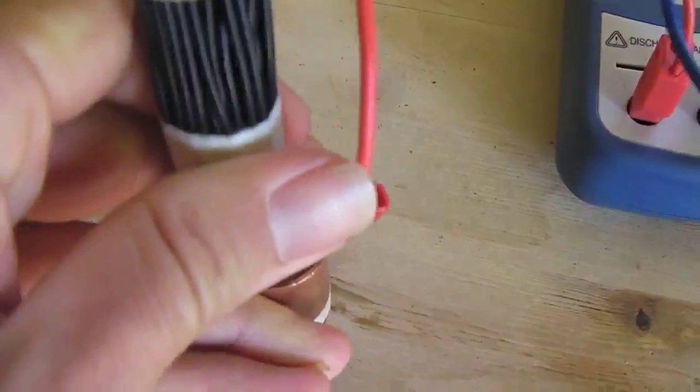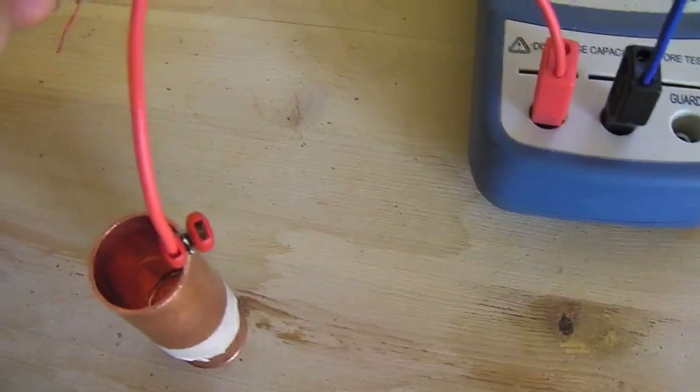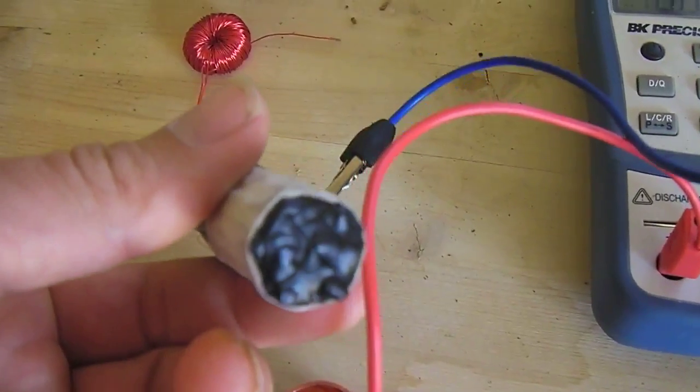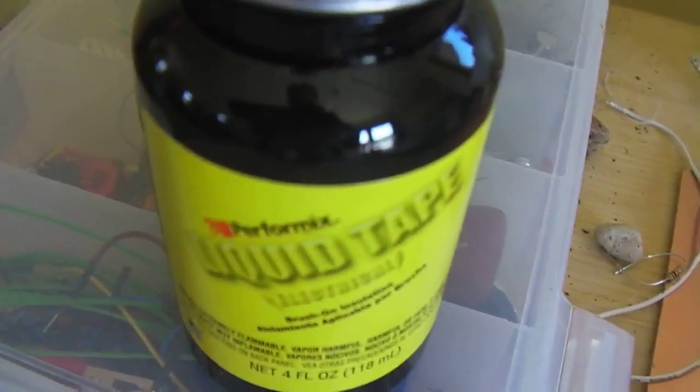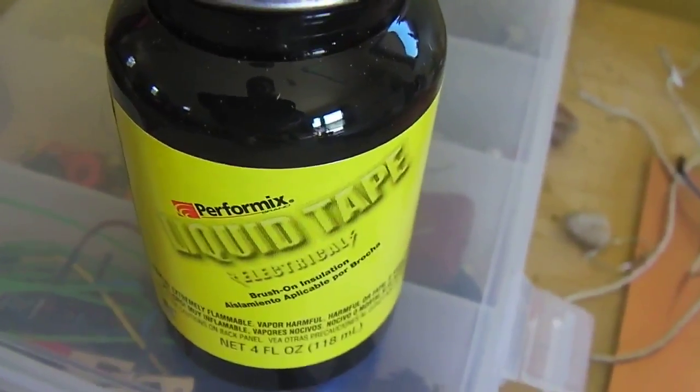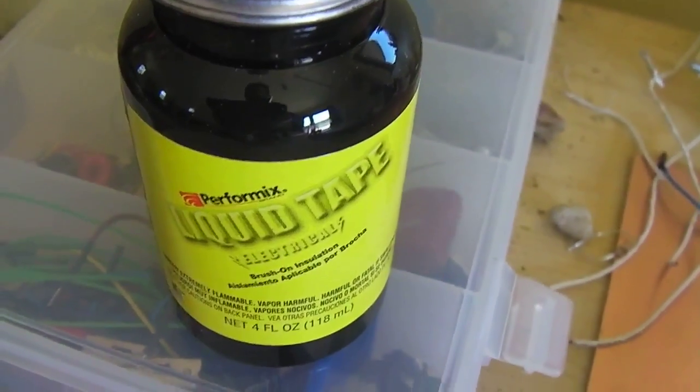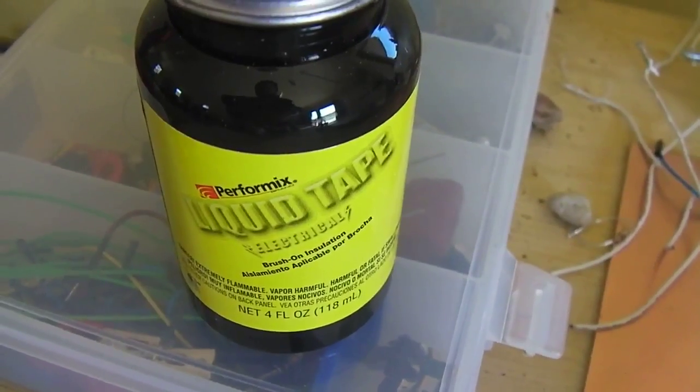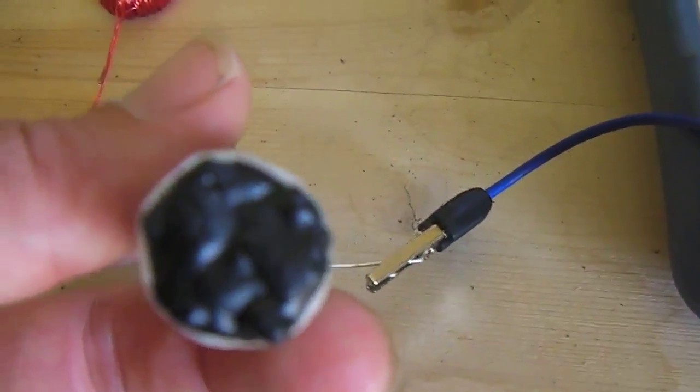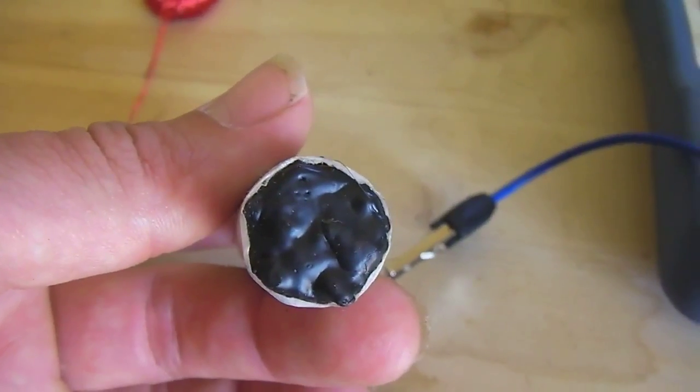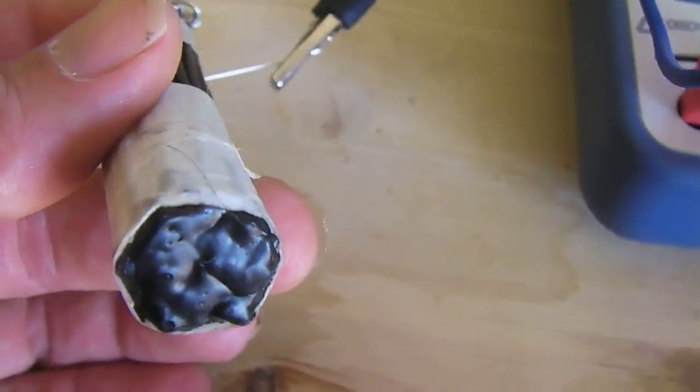The way that I sealed the bottom of this bundle of wires, which is one of the electrodes, is with this liquid tape stuff that I got from the car parts store. It's just brush-on electrical insulation and it worked out really great.